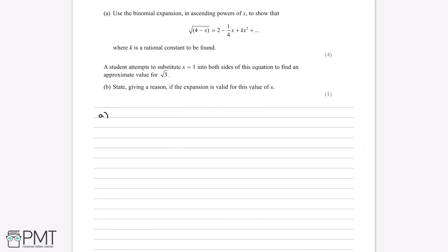So first of all, if we have root 4 minus x, in general for binomial expansion, it's easier to write things in terms of powers. So we can write anything square rooted is the same as to the power of a half. So if we write that out, it automatically becomes a lot easier for us to solve.